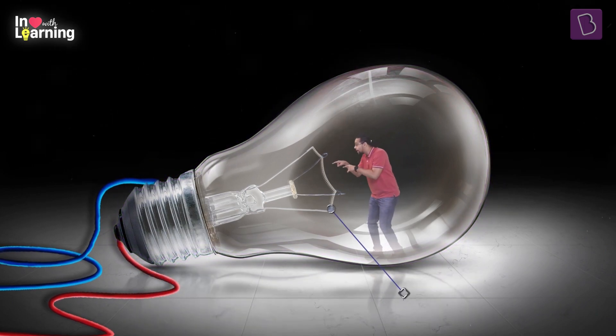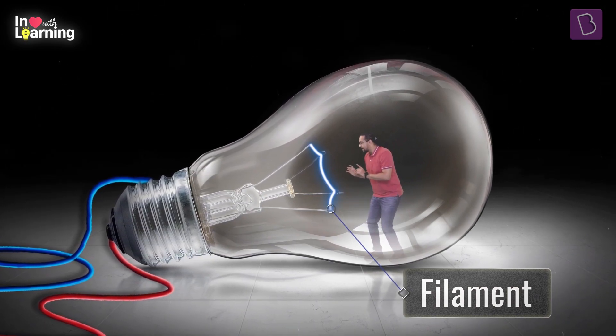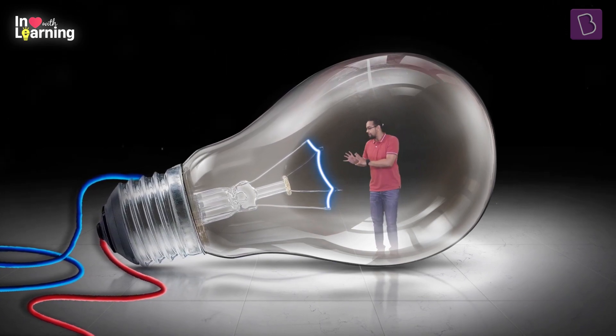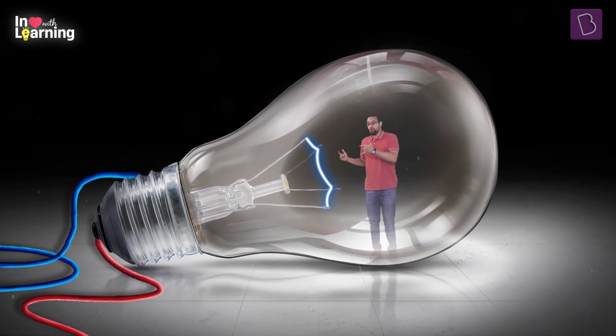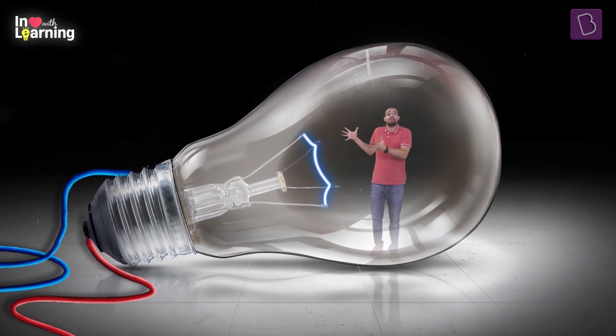You see, this coiled wire here, this guy is called the filament. Now, I should avoid getting too close to it because it's very delicate, very fragile. And I can't afford to damage it because this is the wire that actually gives out the light of the bulb.